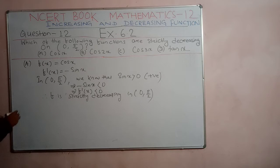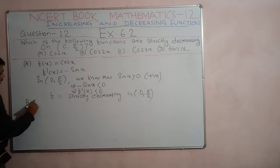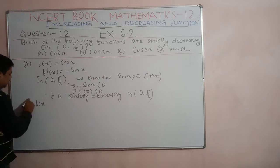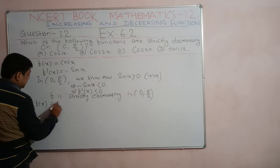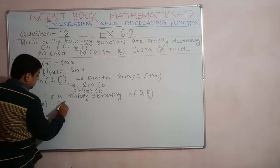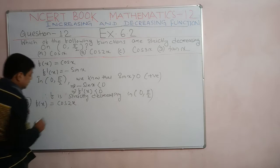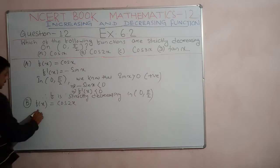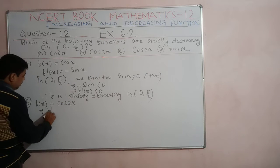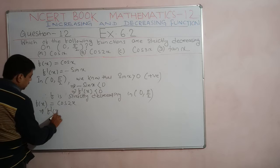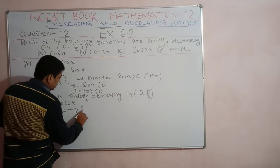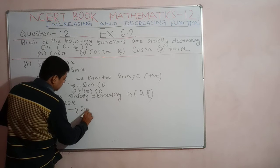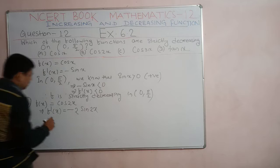Now let's see the second function. For part (b), f(x) = cos 2x. Finding the derivative in the similar manner, f'(x) is equal to minus 2 sin 2x.